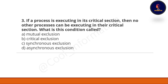Next question: if a process is executing in its critical section, then no other process can be executing in their critical section — what is this condition called? This is a very important question. Option A: mutual exclusion. Option B: critical exclusion. Option C: synchronous exclusion. Option D: asynchronous exclusion. The correct option is A — mutual exclusion.